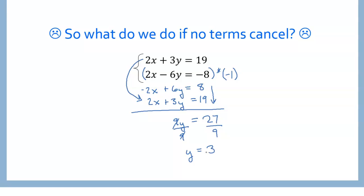Before we finish, let's talk about why we can multiply an entire equation by negative 1. If you think back, the multiplication property of equality says that if a equals b, then a times z equals b times z — we can multiply both sides by the same thing and our outcome will still be equal. That's exactly what we did here, with z being negative 1. We multiplied it by this side and by this side.